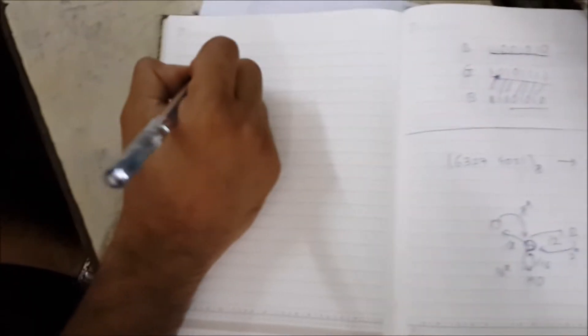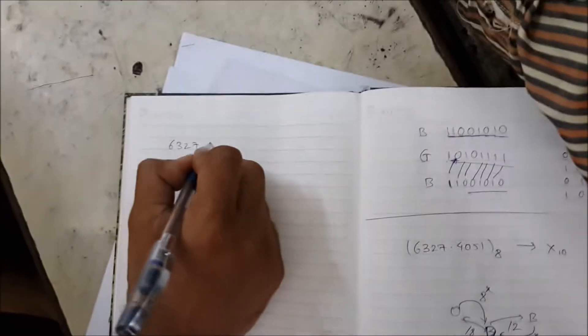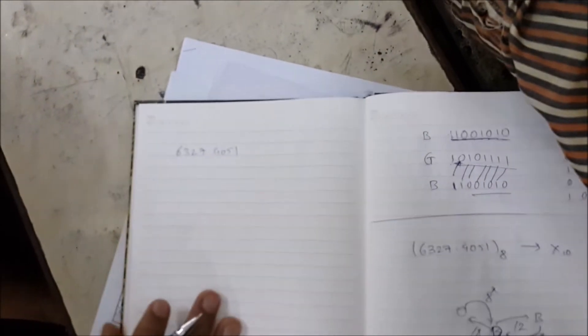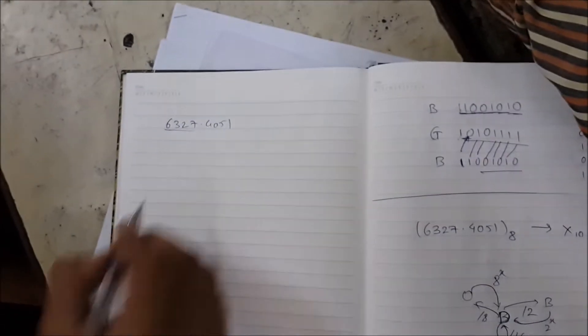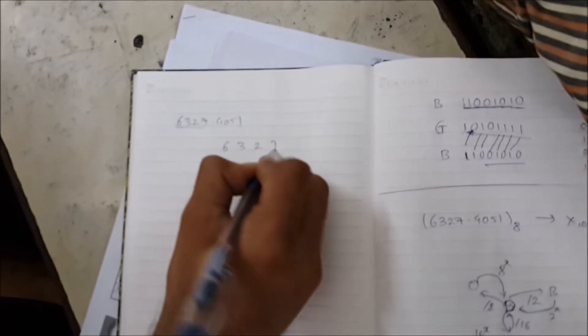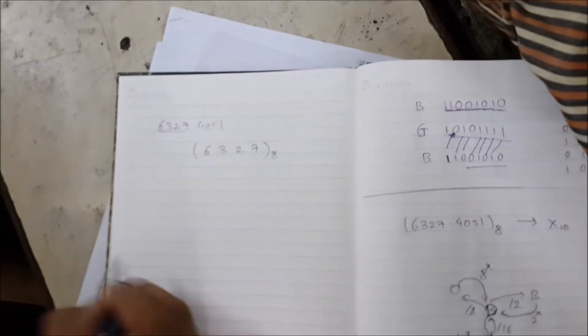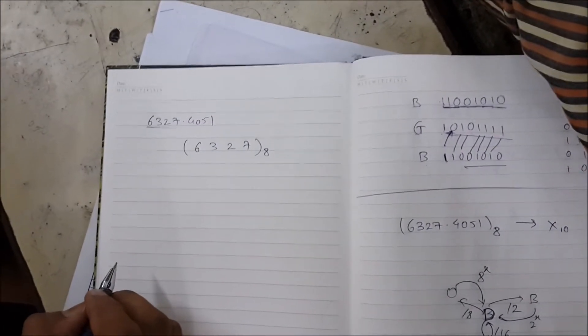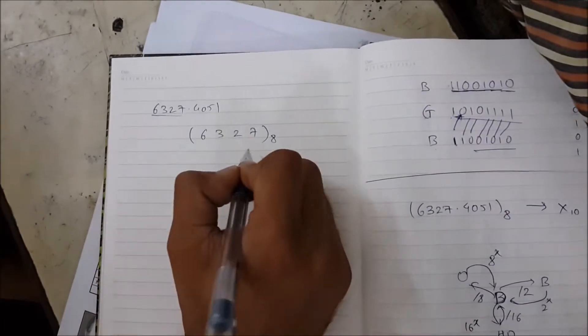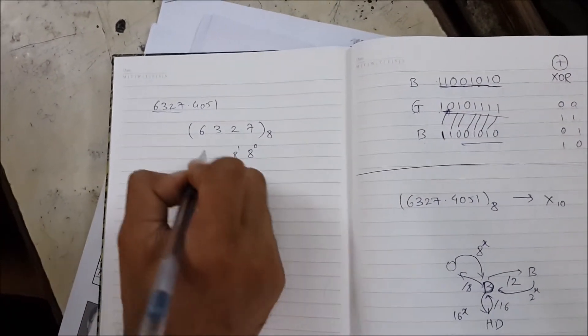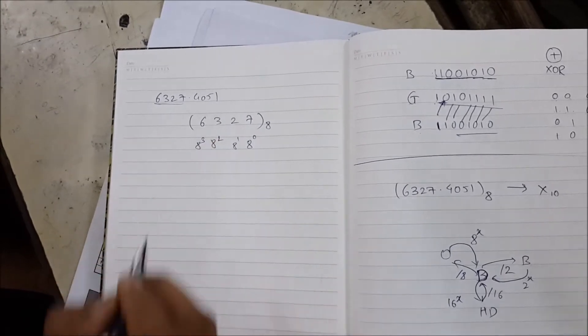So this is your number: 6327.4051. We will take the part before the decimal point, which is 6327 in base 8. We need to find the decimal equivalent. So we use powers of 8: 8 raised to 0, 8 raised to 1, 8 raised to 2, and 8 raised to 3.